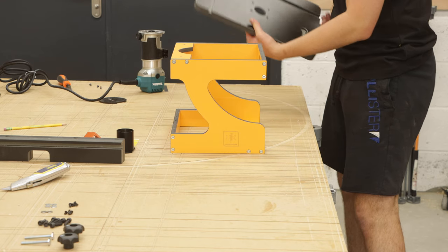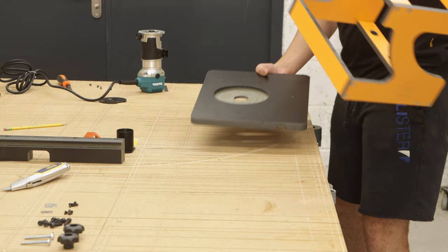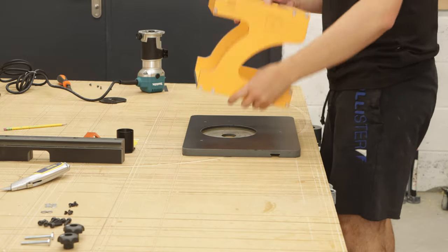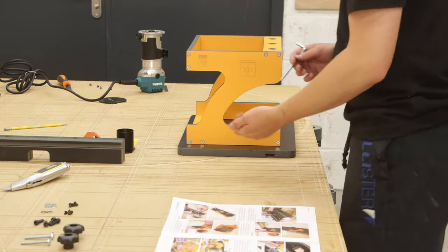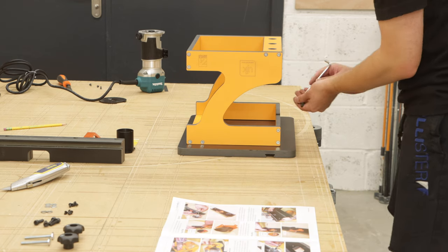So now the holes are drilled out, I can mount the tabletop onto the base. These bolts are slightly longer and I need an allen key to install them.